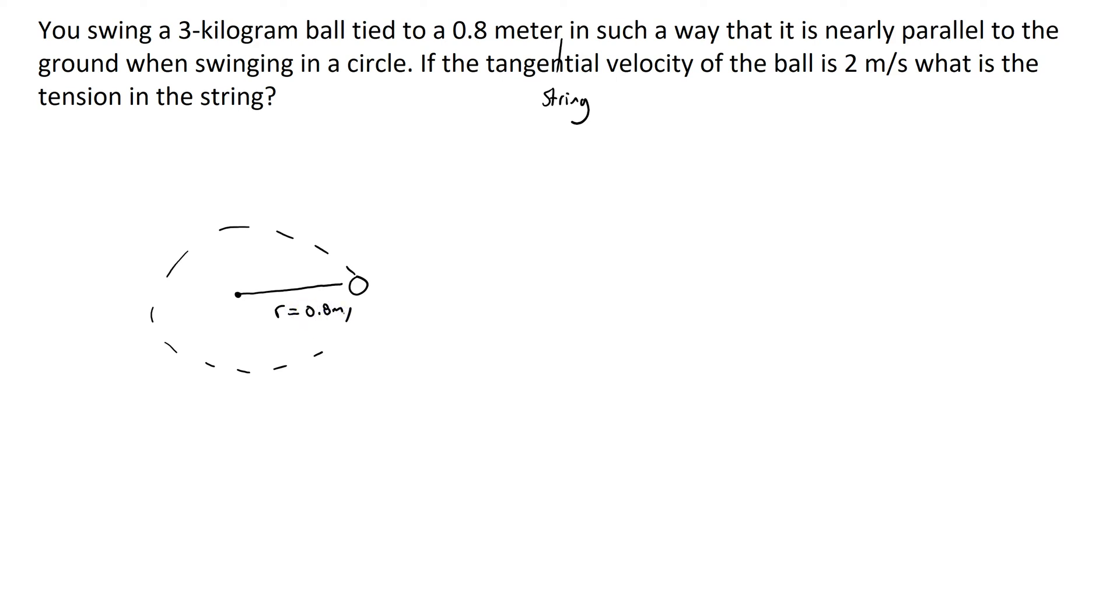And later we'll talk about what to do if you're swinging the ball and it's not nearly parallel, it's actually kind of angled a little bit, like a small pendulum, kind of like a cone. But we'll talk about that later. The ball is moving with a tangential velocity, we'll call it v, of two meters per second. And we need to find the tension in the string.